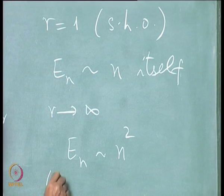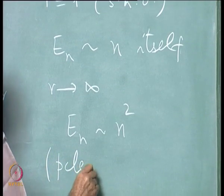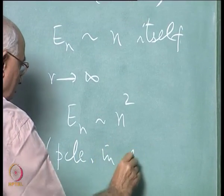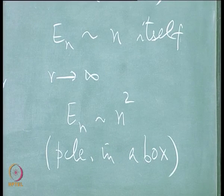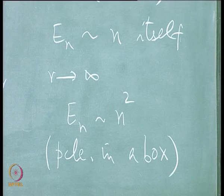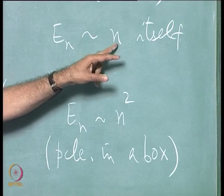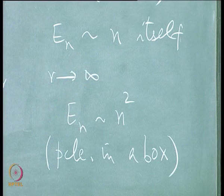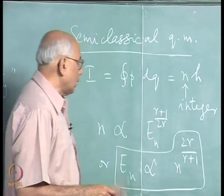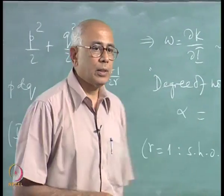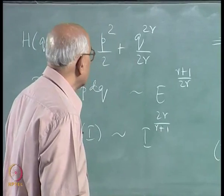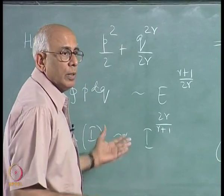This is exactly the same as the level spacing for a particle in a one-dimensional box, so that limit is also correctly obtained from this semi-classical formula. One can go further and find corrections to this result, but we will not pursue that now. So much for this digression on semi-classical quantization, which follows from the action-angle variable arguments.